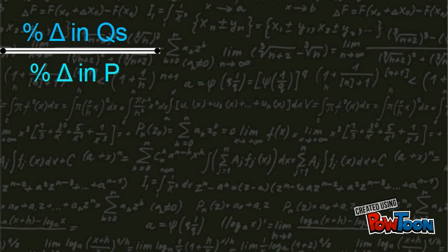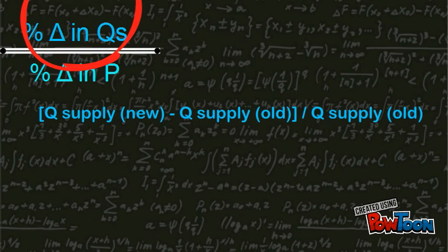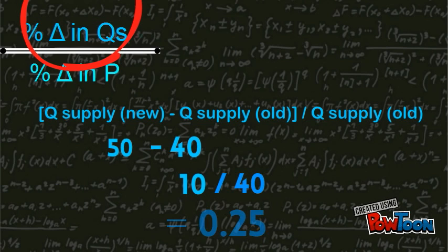Let's start by figuring out the percent change in quantity supplied. You take the new quantity supplied, which is 50, take away the old quantity supplied, which is 40, which equals 10. Now you divide 10 by the old quantity supplied, which equals 0.25.